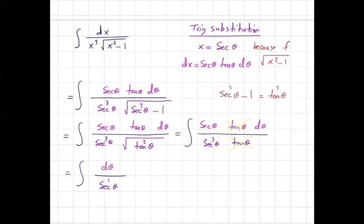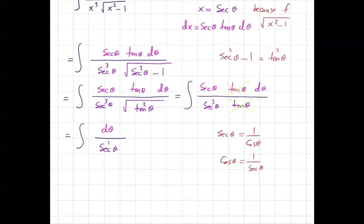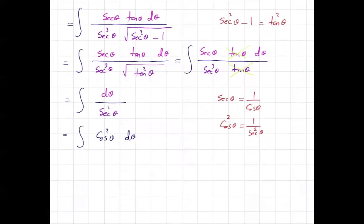By definition, secant theta equals 1 over cosine theta, so cosine theta is 1 over secant theta, and cosine squared theta equals 1 over secant squared theta. So this integral becomes the integral of cosine squared theta d theta. From pre-calculus, cosine squared theta can be written as 1 plus cosine 2 theta divided by 2. So the integral equals the integral of (1 plus cosine 2 theta) divided by 2, d theta.